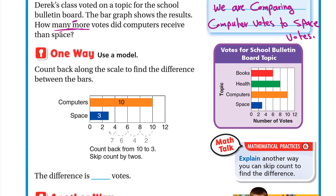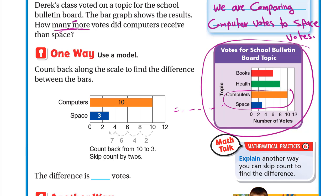The table has books, health, computers, and space, but we are just comparing computers and space. One way is to count back along the scale to find the difference between the bars. The computers bar is at 10. Since the scale goes by twos, we count back: 2, 4, 6. The space bar is between 2 and 4, so we count one more — that gives us 2, 4, 6, 7.